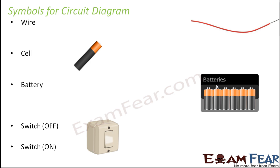Another important element is the switch — it has specific symbols for its off condition and its on condition. For wire, we simply use a straight line. For a cell, we use two vertical lines, making sure that one line is longer than the other.